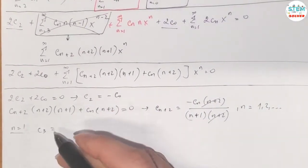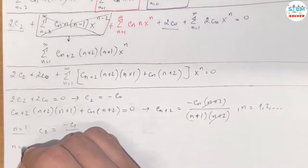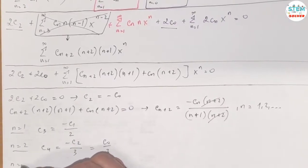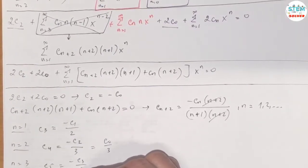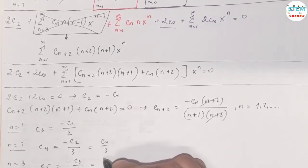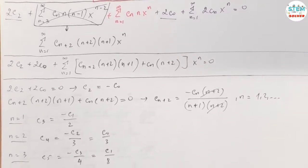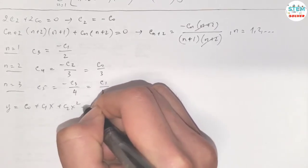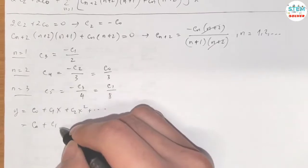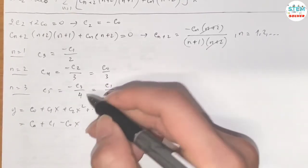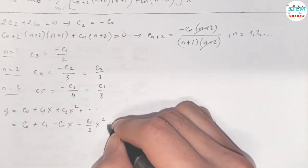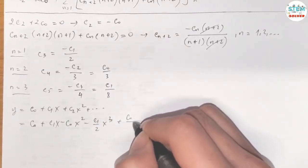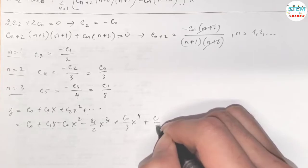When n equals 1, we get c_3 equals negative c_1 over 2. When n equals 2, we get c_4 equals negative c_2 over 3; since c_2 equals negative c_0, this gives c_4 equals c_0 over 3. When n equals 3, we get c_5 equals negative c_3 over 4; since c_3 equals negative c_1 over 2, this gives c_5 equals c_1 over 8. So the solution is c_0 plus c_1 x plus c_2 x squared plus... and substituting: c_4 is c_0 over 3 times x to the 4th, and c_5 is c_1 over 8 times x to the 5th.